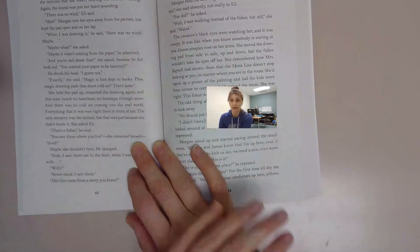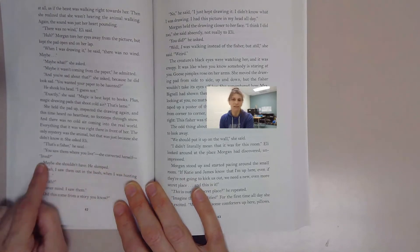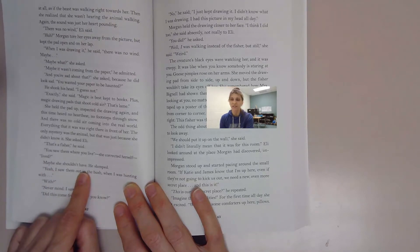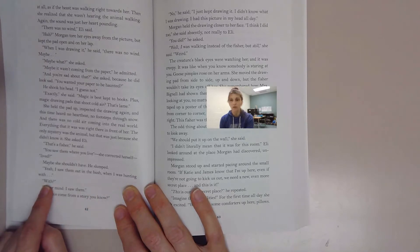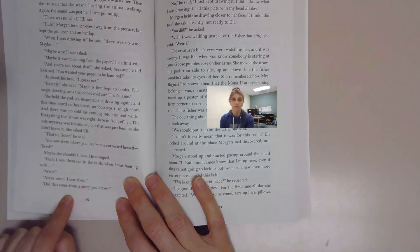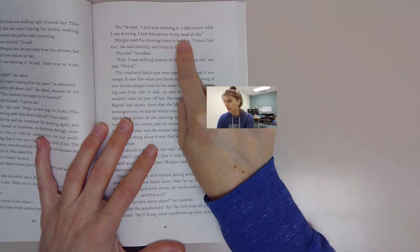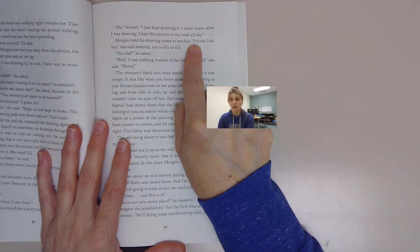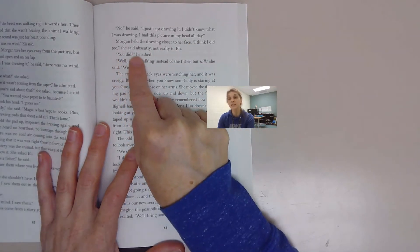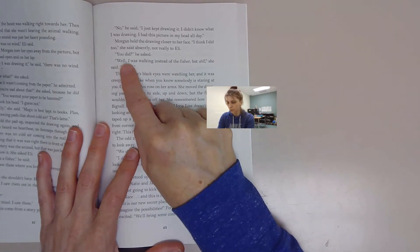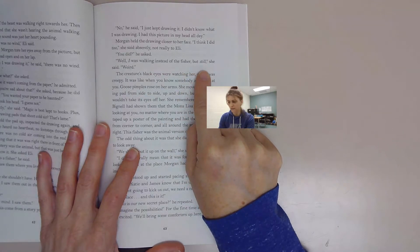He says on page 62 we'll just read from 62 here where it says: That's a fisher? Okay, that's a fisher, he said. You saw them where you live, she corrected herself. Lived, maybe she shouldn't have. He slumped. Yeah, I saw them out in the bush when I was hunting with, with, never mind I saw them. Did this come from a story you know? No, he said, I just kept drawing it. I didn't know what I was drawing. I had this picture in my head all day.